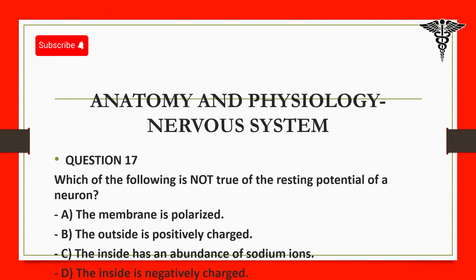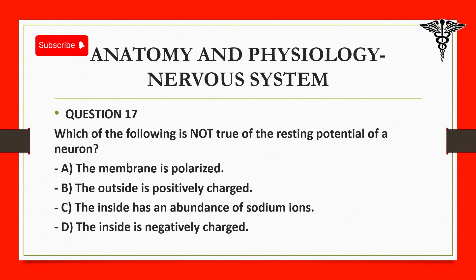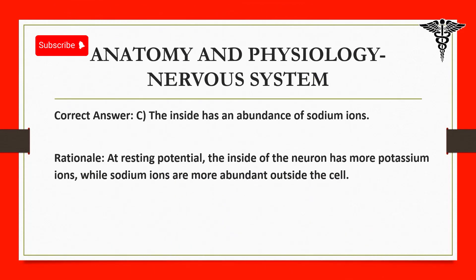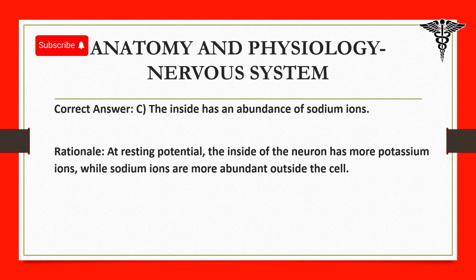Question 17: Which of the following is not true of the resting potential of a neuron? A. The membrane is polarized. B. The outside is positively charged. C. The inside has an abundance of sodium ions. D. The inside is negatively charged. Correct answer: C. The inside has an abundance of sodium ions. Rationale: At resting potential, the inside of the neuron has more potassium ions, while sodium ions are more abundant outside the cell.